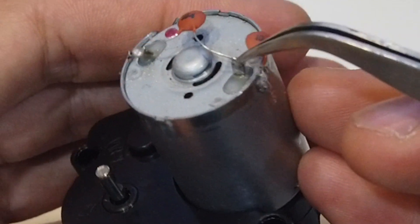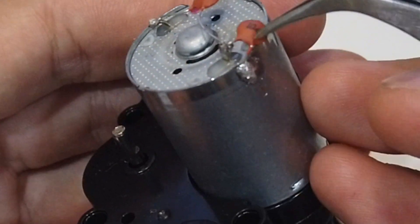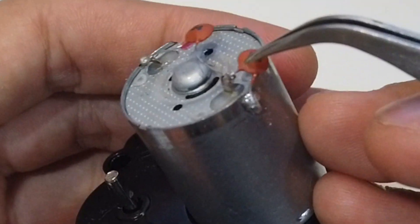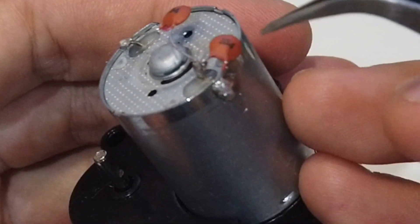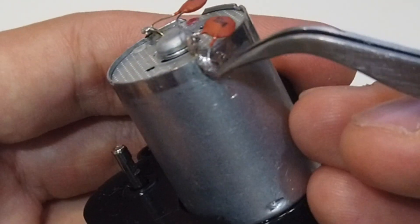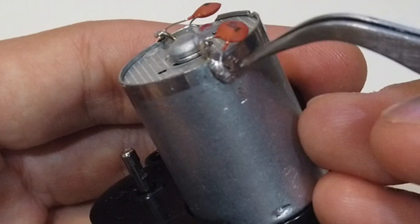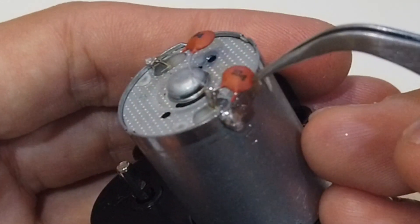Then the second 104 capacitor, you can cut the terminal shorter. One end of it connect to this side of the motor terminal, then the other side connect, ground it through, ground it to the motor case through a capacitor.